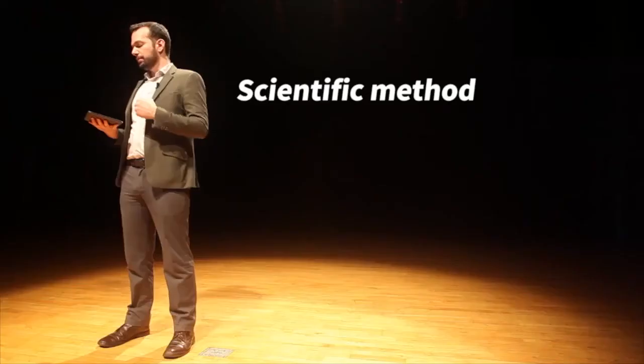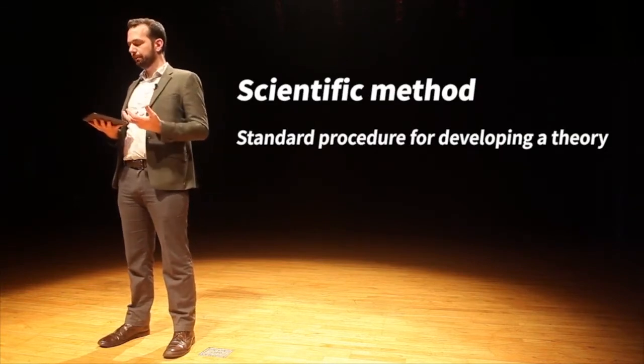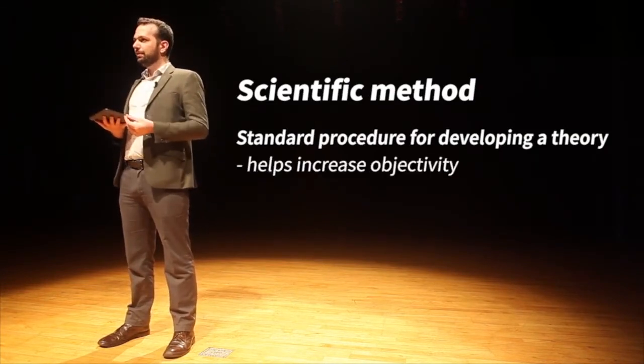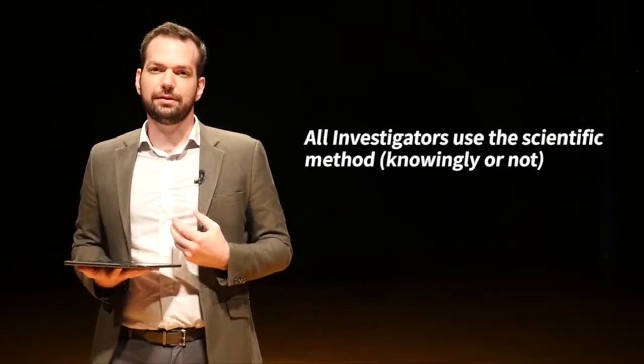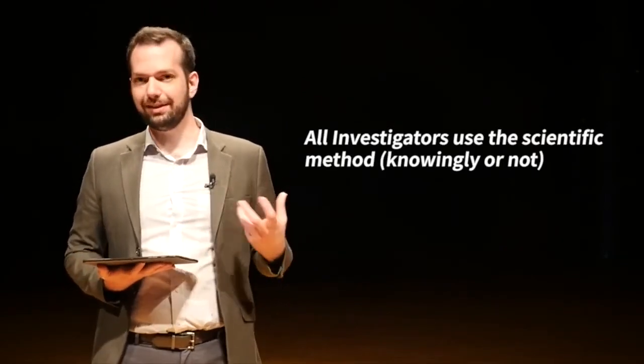One way to attempt to reduce these biases is by using a particular method or process for our investigations. The best method we can use is the scientific method — a standard procedure for developing a theory. It helps increase objectivity because we're following a specific process. The scientific method doesn't care about our biases and there's not really any room to be biased in it. All investigators use the scientific method, knowingly or not.